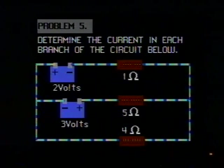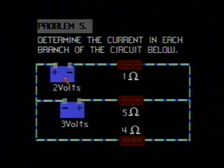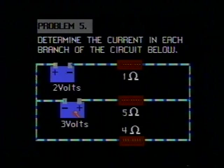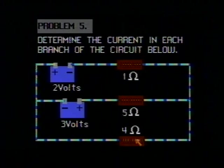Problem 5 reads: determine the current in each branch of the circuit below. We have a 2 volt battery, a 3 volt battery, a 1 ohm resistor, a 5 ohm resistor, and a 4 ohm resistor.